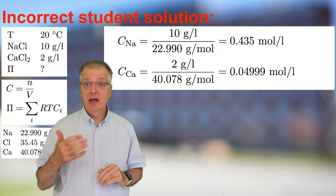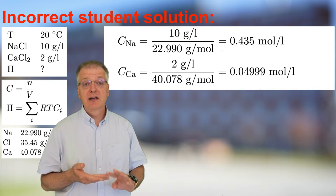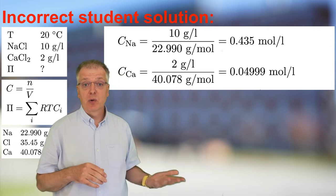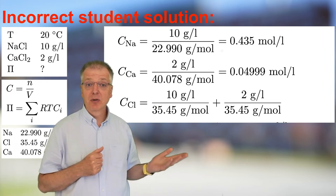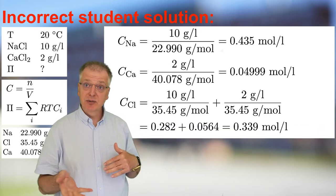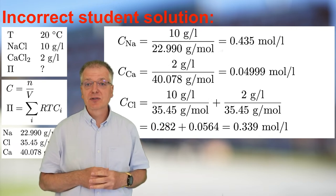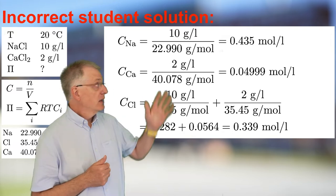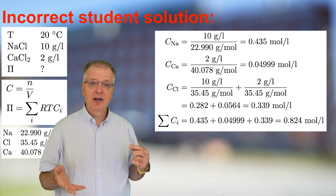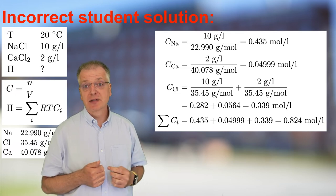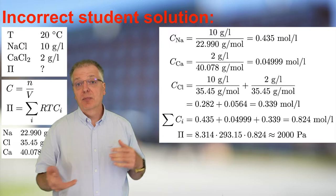The concentration of calcium is 2 gram per liter divided by 40.078 gram per mole, which gives us 0.04999 mole per liter. The concentration of chloride is the sum of chloride from sodium chloride and calcium chloride — that is, 10 gram per liter divided by 35.45 gram per mole, which equals 0.282 mole per liter, plus 2 gram per liter divided by 35.45 gram per mole, which equals 0.0564 mole per liter. So the total chloride concentration is 0.339 mole per liter. Summing all concentrations gives 0.435 plus 0.04999 plus 0.339, which is 0.824 mole per liter, and an osmotic pressure of 8.314 times 293.15 times 0.824, approximately 2000 Pascal.